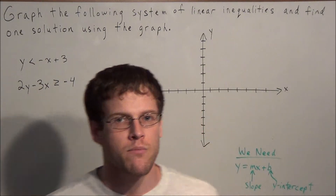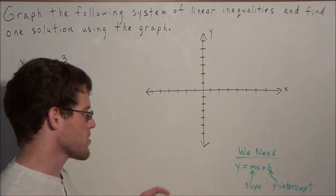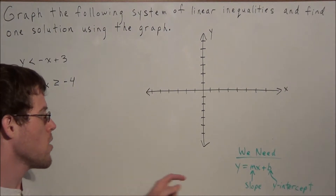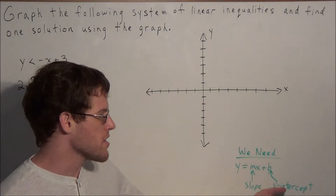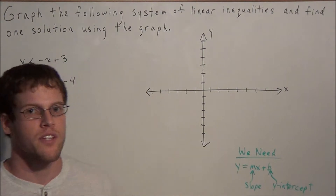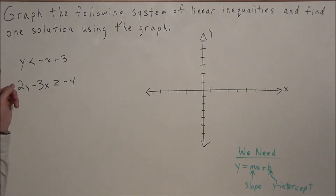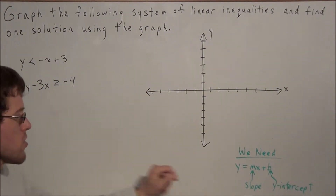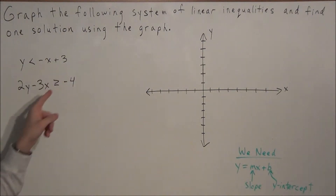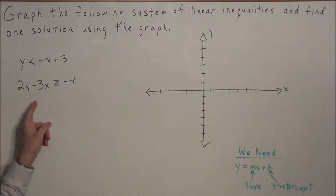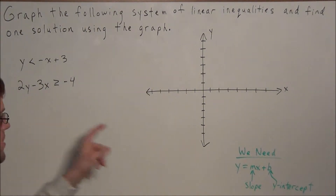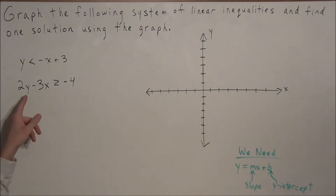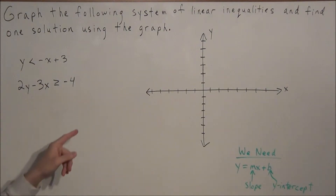For this problem we really want to make use of the slope-intercept form y equals mx plus b, where m is our slope and b is our y-intercept. Notice how the first inequality is already in slope-intercept form, but the second one is not. So the first thing we need to do is get the second one in slope-intercept form where we have y is greater than or equal to mx plus b.